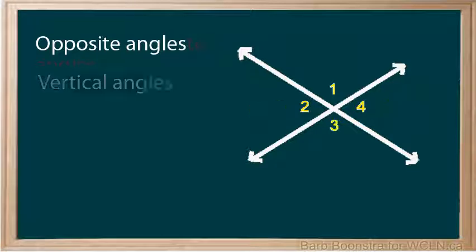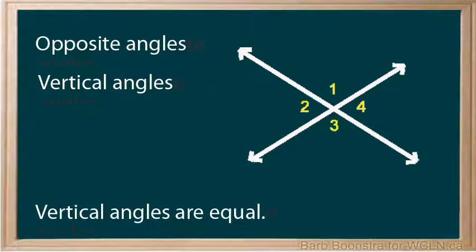Opposite angles can also be called vertical angles. Vertical angles are always congruent, which means that they are equal in number of degrees.